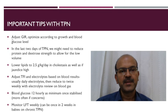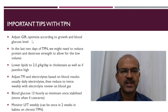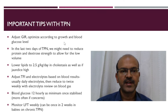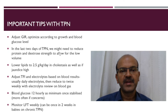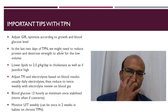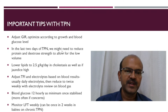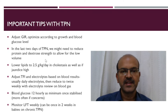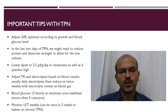Important tips with TPN: we have to adjust the glucose infusion rate and optimize it according to growth and blood glucose level. In the last 2 days of TPN, because the volume of TPN is very low, we might need to reduce the protein and energy density to allow for the low volume.